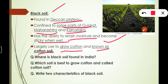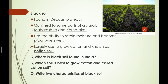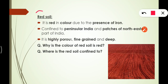To summarize black soil: it is found in the Deccan Plateau, is best for cotton growing, and is called cotton soil. Its two main characteristics are its ability to retain moisture and to become sticky when wet.